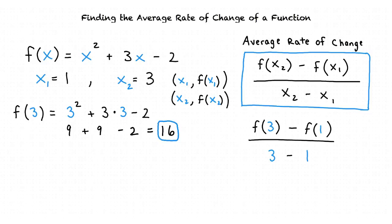Now let's do the same thing with f of 1. Substituting 1 in for x gives f of 1 equals 1 squared plus 3 times 1 minus 2, which equals 1 plus 3 minus 2, equaling 2.